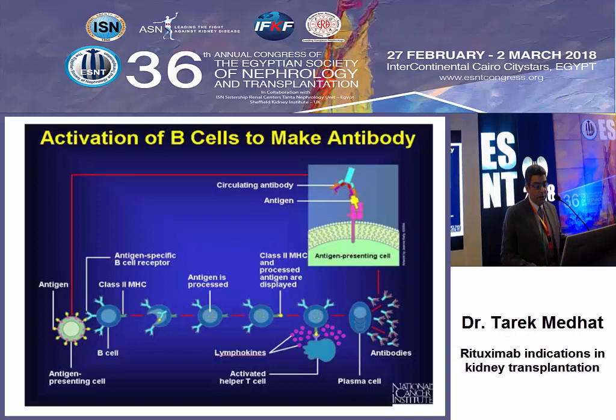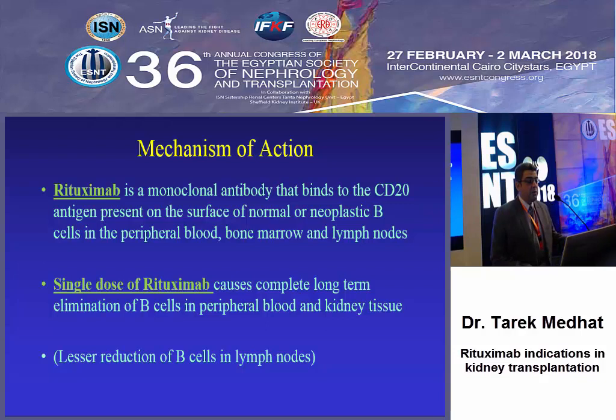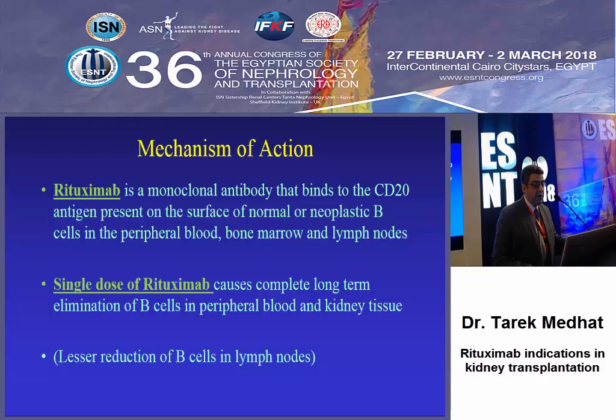The mechanism of action of rituximab is that it is a monoclonal antibody that binds to CD20, present on normal and neoplastic B lymphocytes, and present in the preferred laboratory donor anti-lymphocyte serum. Rituximab causes long-term elimination of B lymphocytes in peripheral blood and lymphoid tissues, with less effect on lymph nodes.